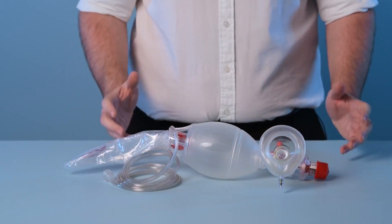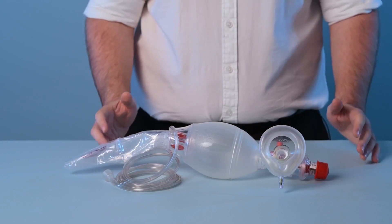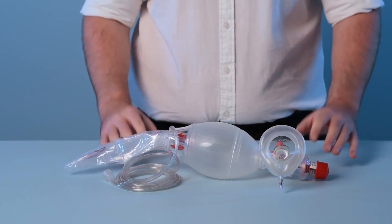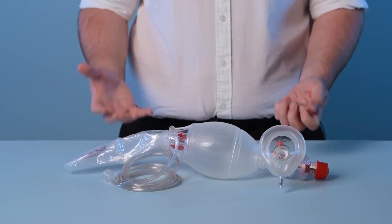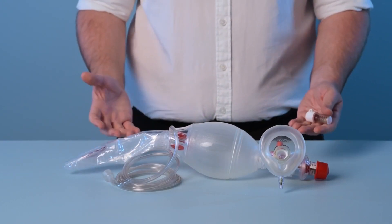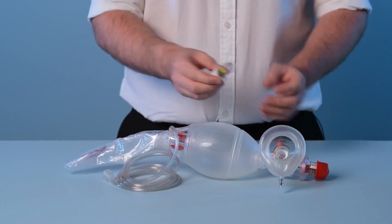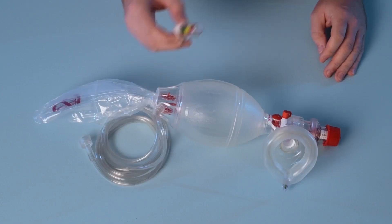Any accessories which are not pre-attached can be assembled onto the device. This may be a peep valve or a manometer. In this case our peep valve has come pre-attached but as we also have an individually packed manometer, I will attach this to the dedicated manometer port.